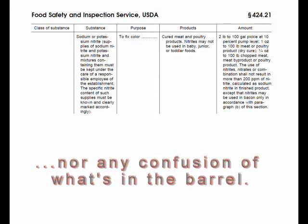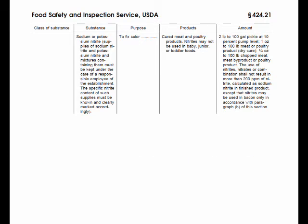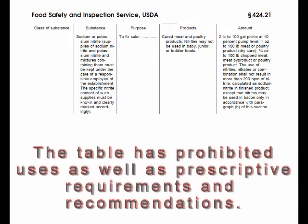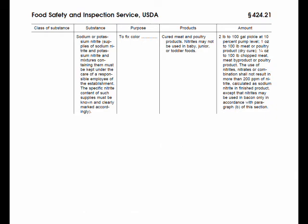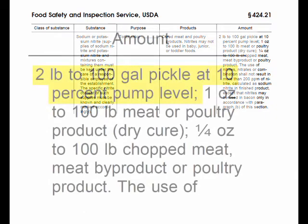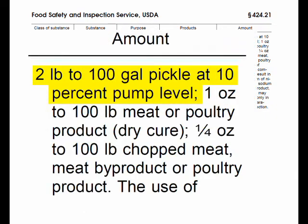The purpose we're going to look at right here is to fix the color. The products are cured meat and poultry products. Nitrites may not be used in baby, junior, or toddler foods. The amounts of nitrite vary with the system of delivery and the type of product used.